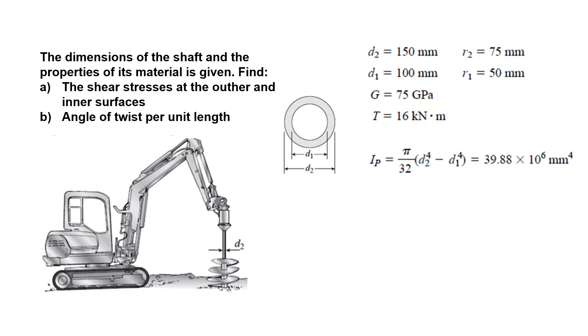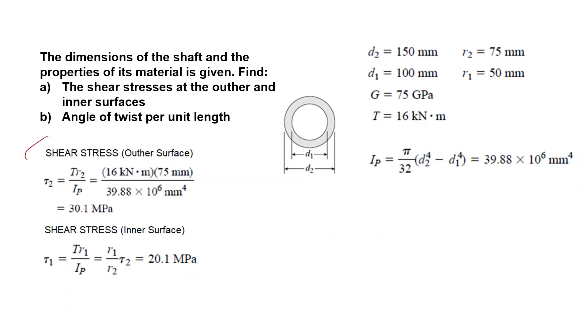Very simple. First, calculate the polar moment of inertia. External, internal radius values, and this is your polar moment of inertia of this tubular shaft in millimeters to the four. We have everything for the outer surface: the torque, radius, moment of inertia, and you have a shear stress 30.1.